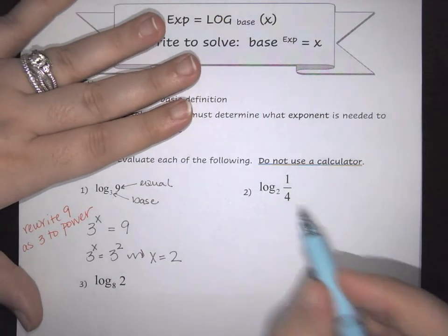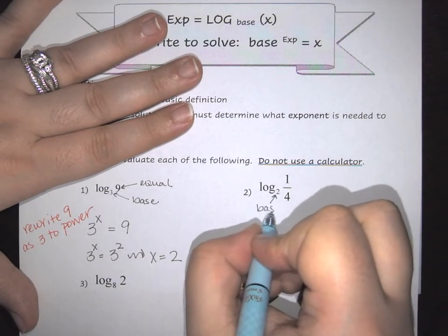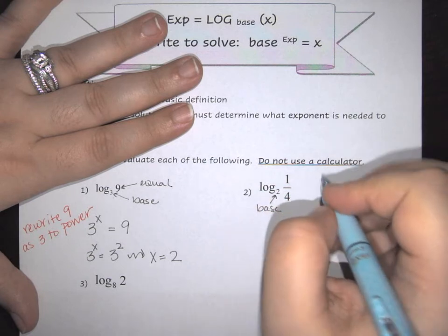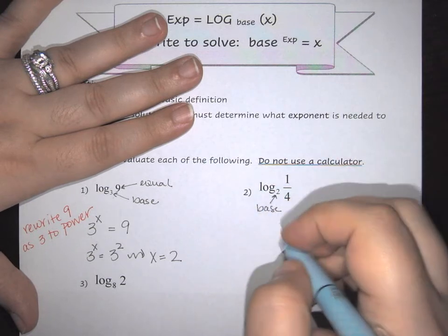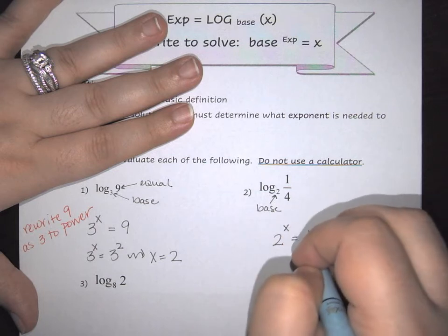Let's look at it again. We have that my 2 here is your base, and the 1 fourth is what it equals. So in this case we would have 2 to the x is equal to 1 fourth.